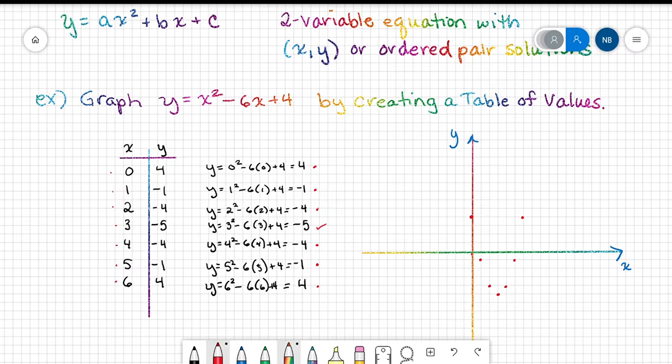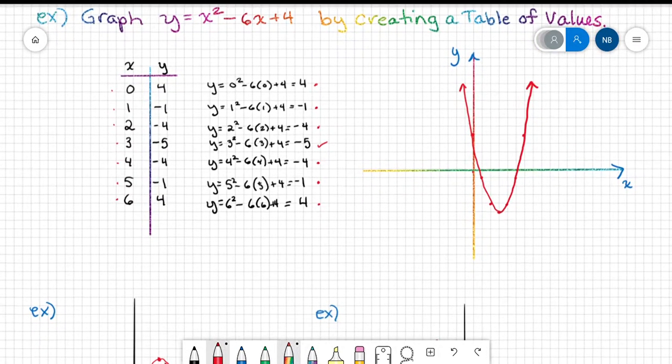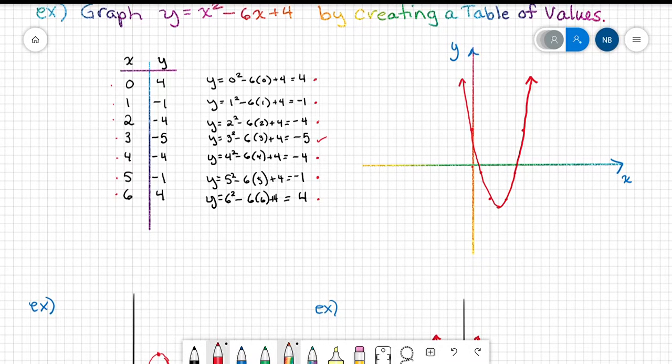I'm going to attempt to connect these. That's not too bad. So I have this shape, and notice it does continue upward forever. Now we're going to write down what we know about this shape. So we're going to label some things on the graph.